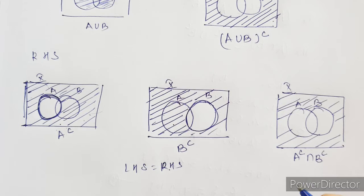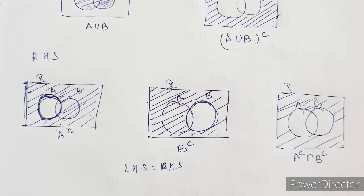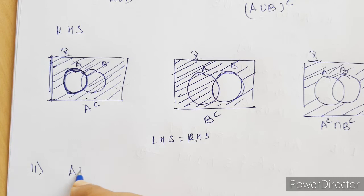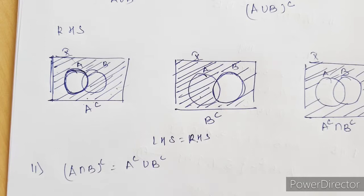Similarly we have to draw it for the second law. In the second law: A intersection B complement is equal to A complement union B complement. So first let's find what A intersection B complement is.